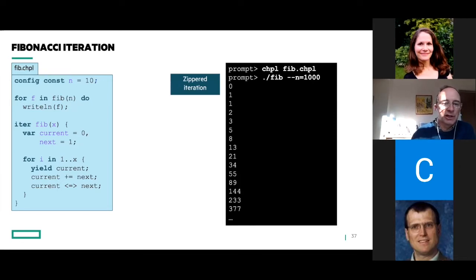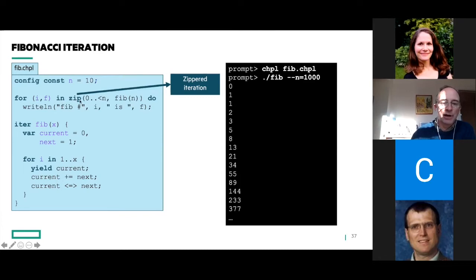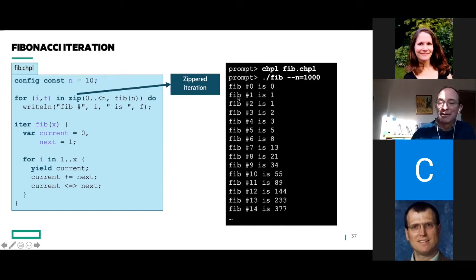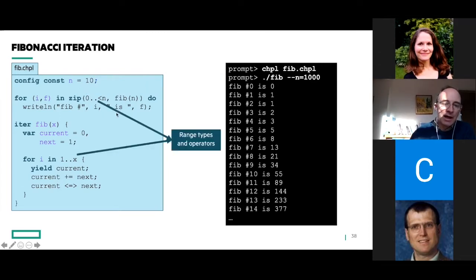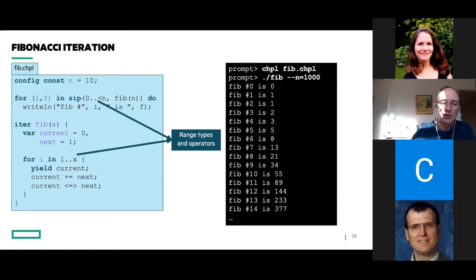Chapel also has zippered iteration. Here I'm just iterating over one thing — my fib(n) iterator. But there's also the ability to use the 'zip' keyword and iterate over multiple things simultaneously where the results come out as a tuple. I'm zipping over fib(n) and also this '0..< n' which is basically zero to n minus one. This gives me two indices back — that zero-to-n-minus-one value and my Fibonacci number — so I can make my output a little more decorated. Chapel has these ranges built in: '1..x' is the integers one through X inclusive, '0..< n' is an open interval where n is not included — sugar for avoiding typing 'n minus one' all the time. There's a lot of operators and methods on ranges, and once you get into multi-dimensional arrays and slicing, these can be really powerful.